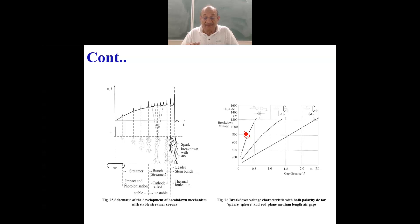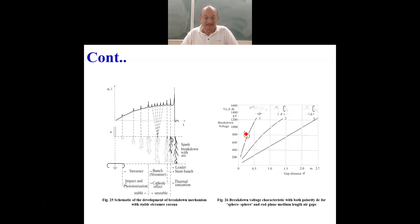Another important thing we learned yesterday: since no partial breakdown activity takes place under this condition, the breakdown strength for negative as well as for positive polarities is measured to be the same. The streamer avalanche process would lead to breakdown, but no partial breakdown precedes the complete or global breakdown across the gap because the field is weakly non-uniform. There is no effect of polarity of the voltage because no partial breakdown activity precedes the global breakdown.